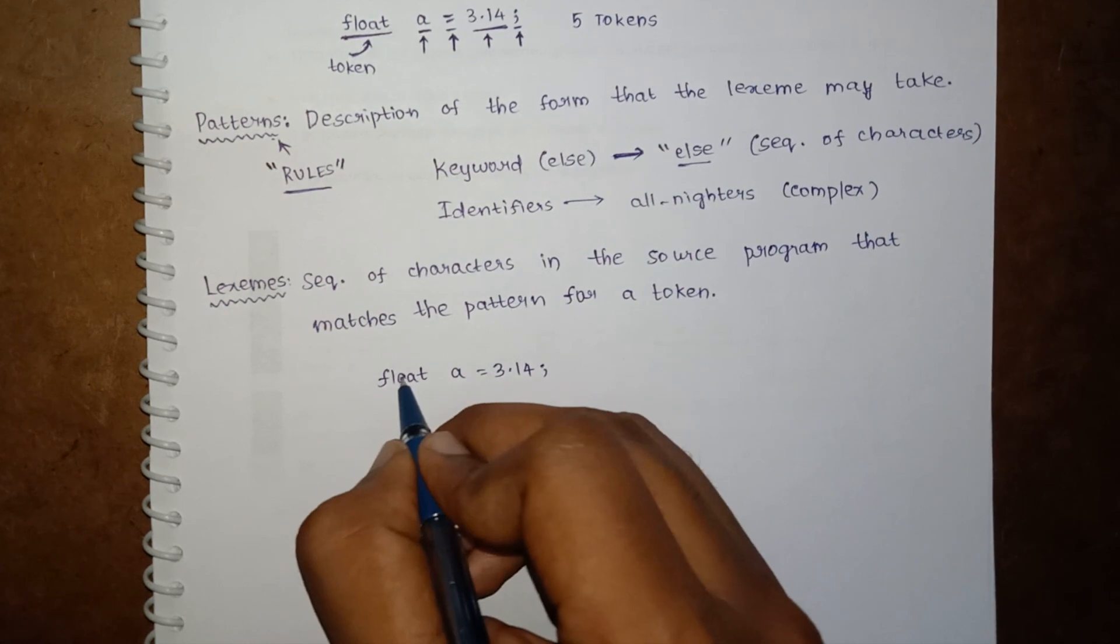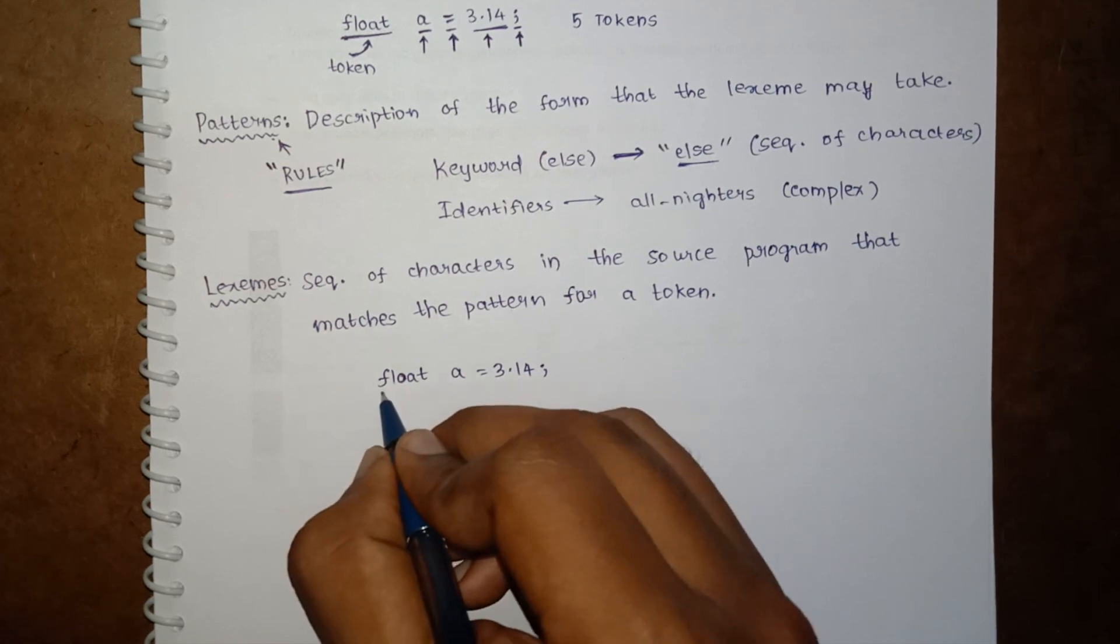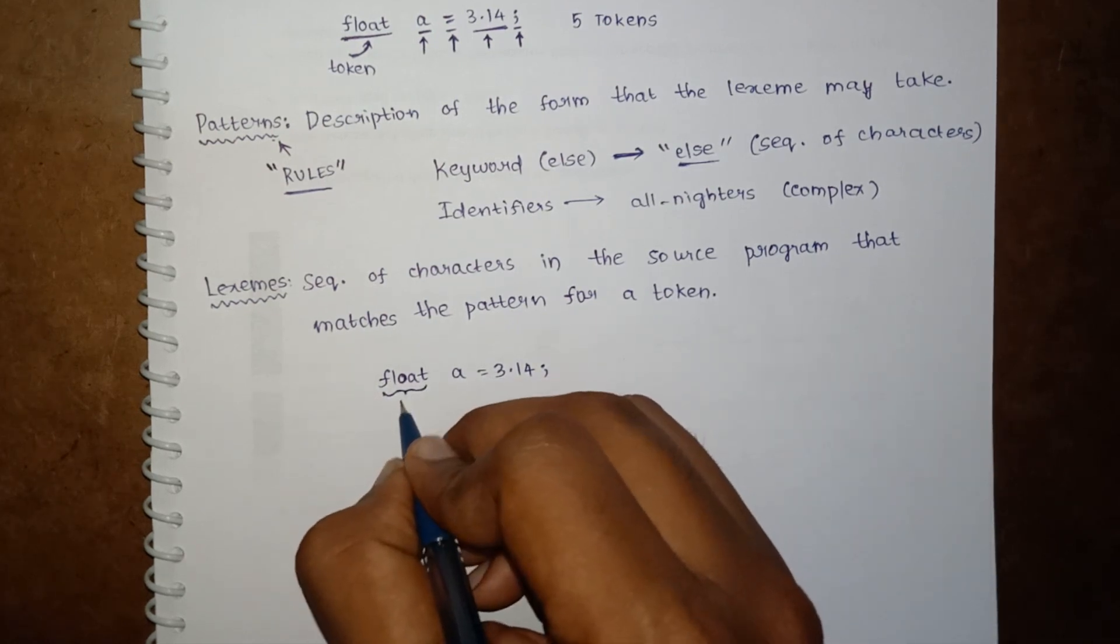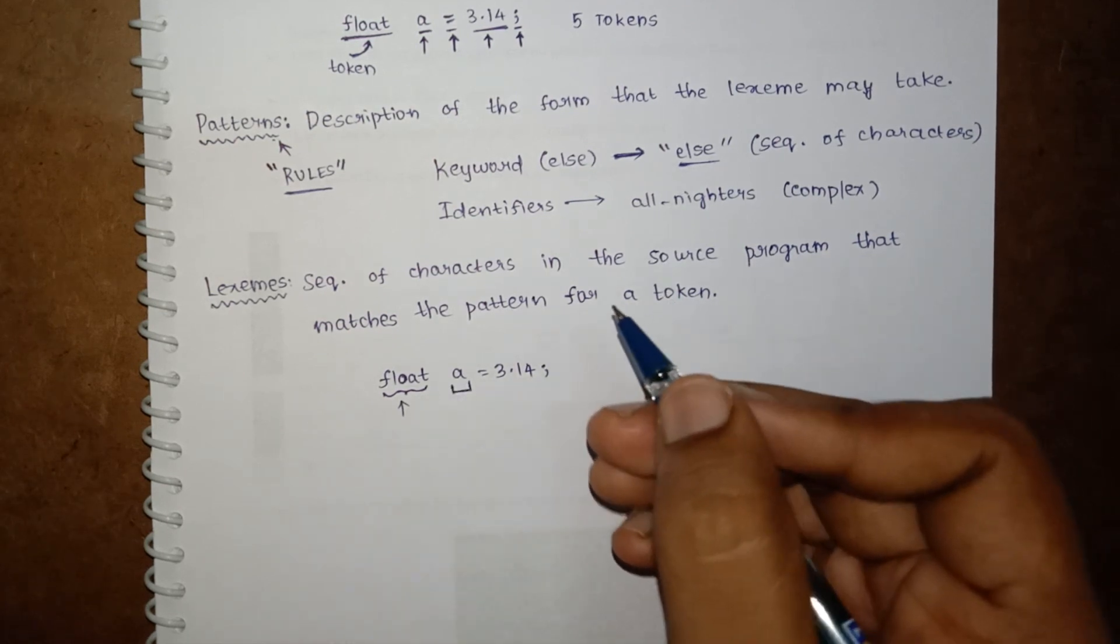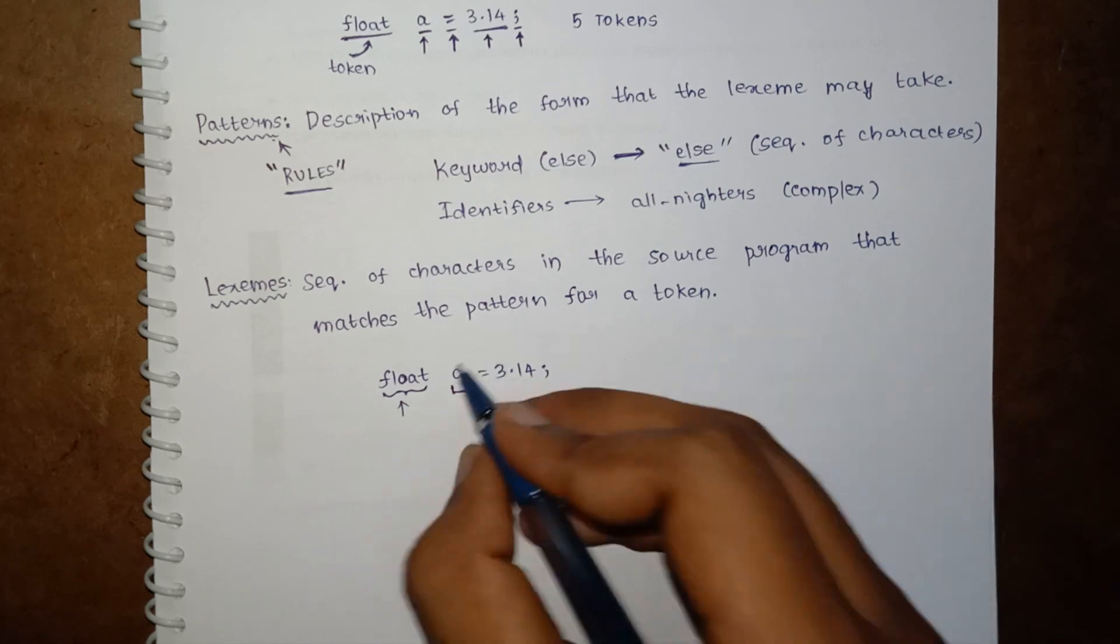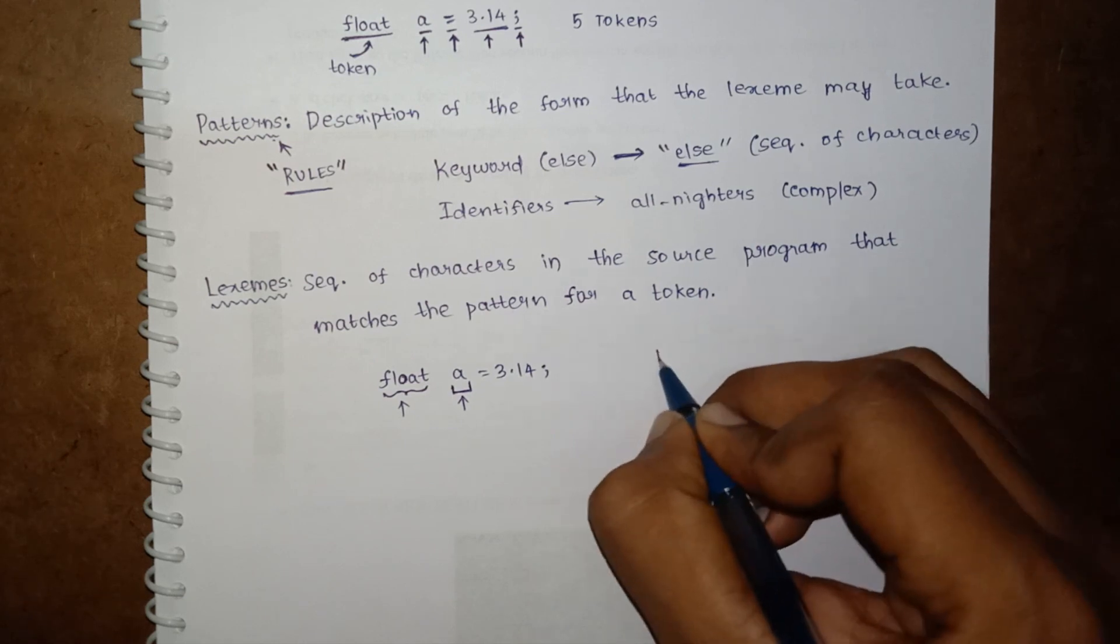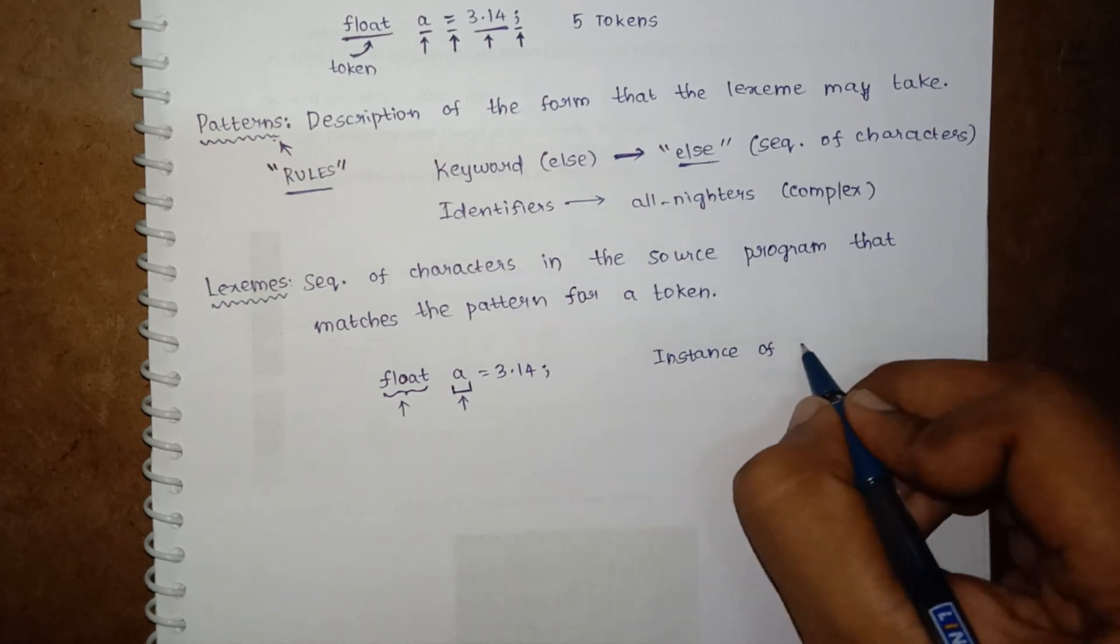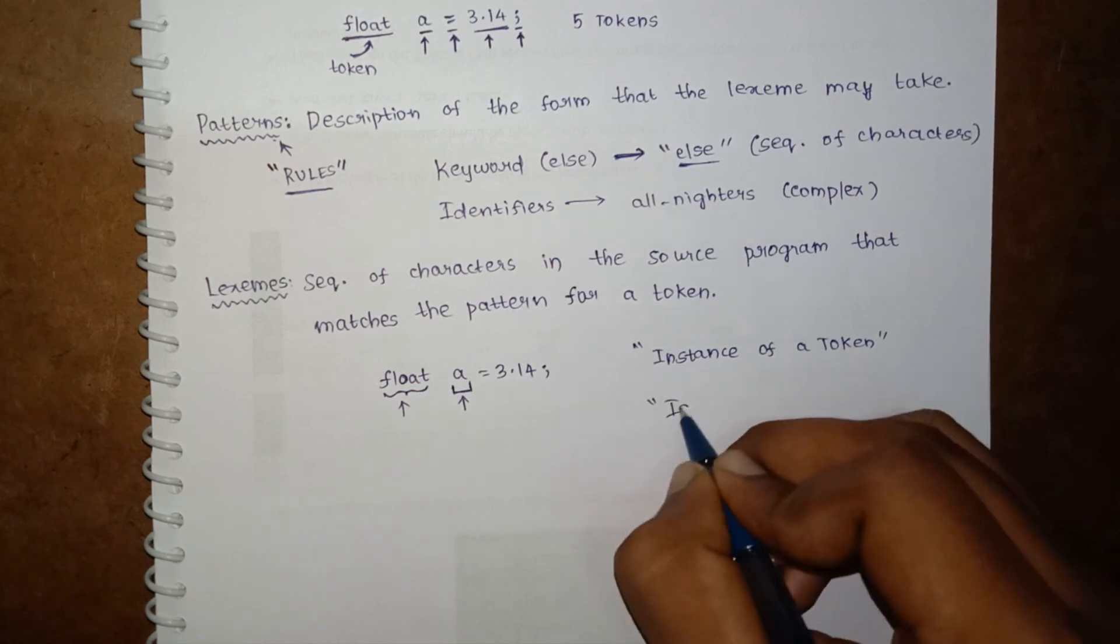The pattern for a keyword is simply a sequence of characters, right? Okay, now this 'float' - is it following the sequence of characters of a keyword, that is f-l-o-a-t? If it follows it, it is a lexeme. Now consider this 'a' - is it following all the rules to be an identifier? If it follows, this is a lexeme. It is similar to token, or we can simply say it as an instance of a token. Token is identified by lexical analyzer.